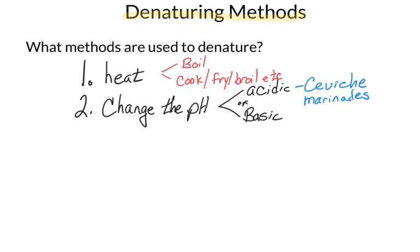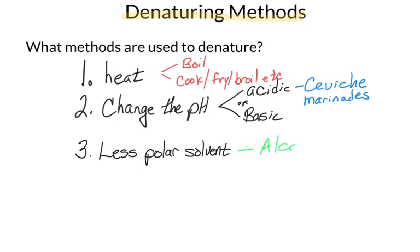A third method, used commonly in our everyday life but not so much for cooking, is to use a less polar solvent. Normally proteins are found under aqueous conditions, which means there's lots of water. But if we find something that's less polar than water — still somewhat polar, but not completely polar — we can denature the protein. Commonly we use hand sanitizer to clean our hands. The major ingredient of hand sanitizer is alcohol, and that alcohol is less polar than water. So it denatures the protein by flipping it inside out — what hated water before was on the inside, and now it comes out to the outside because it's less polar.